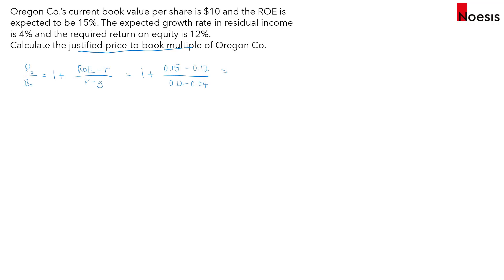This gives us 1 plus 0.375, which equals 1.375. Because ROE is greater than R, the justified price-to-book multiple is greater than 1, at 1.375.